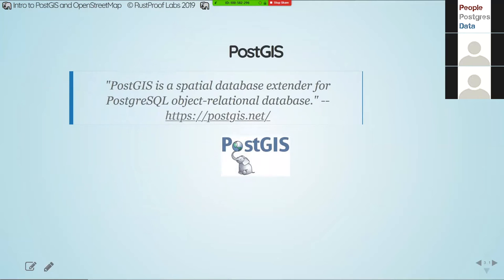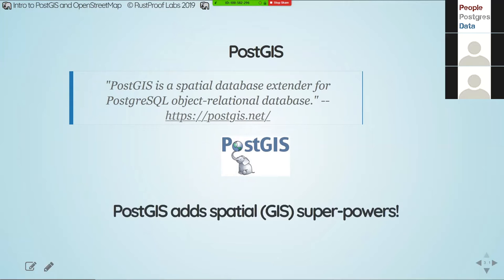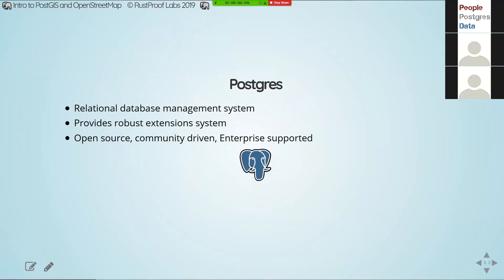PostGIS — the official definition is up here, but I like to just say it adds superpowers to your existing relational database. One key word in the official definition is 'spatial database extender.' PostGIS really does sit on the shoulders of Postgres — it's an extension that takes advantage of Postgres's innate ability to be customized. That was a goal from day one with Postgres: to make it easy to modify and customize to your needs. PostGIS took full advantage of that and continues to reap the benefits.